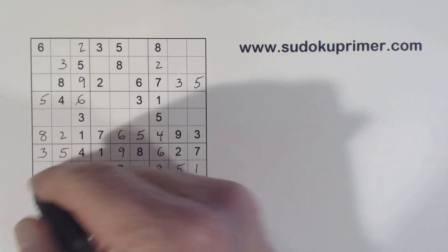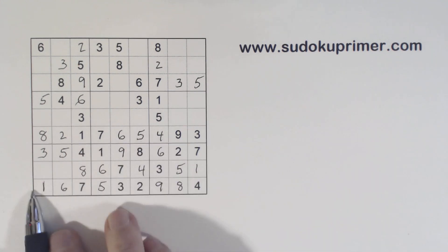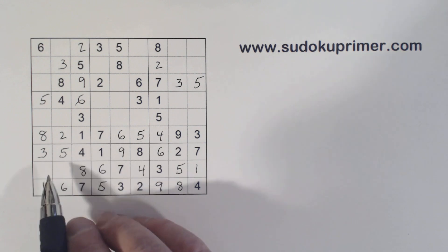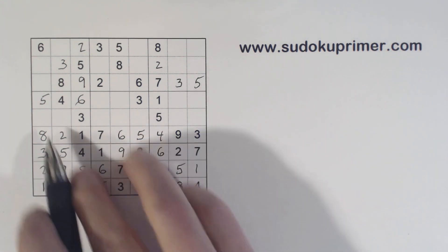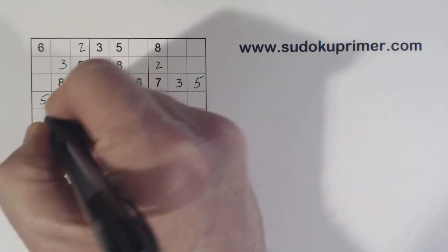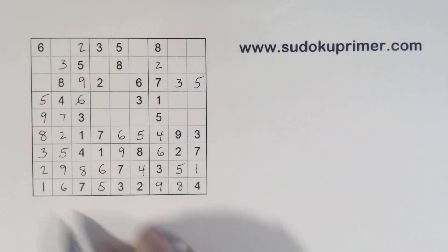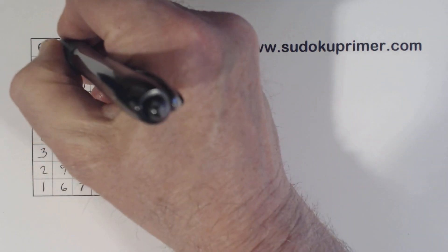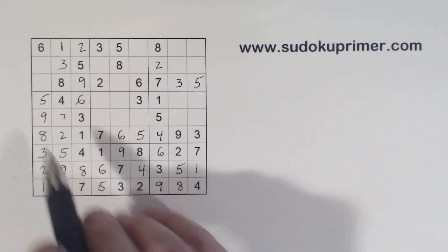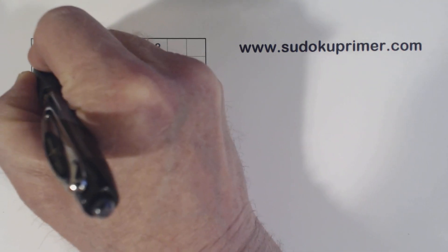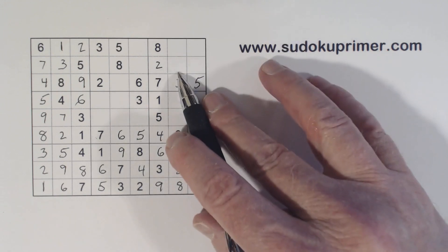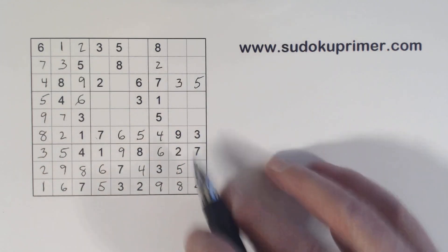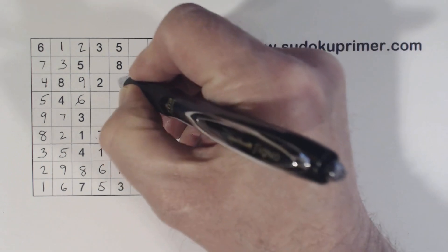All right, now you've got a 1 there. Finish that row. We've got 2 and 9 left here, so we can solve them. 7 and 9 there. This 1 makes that a 1. And we've got a 1 here, 1 there, so we can put a 1 there and a 1 there.